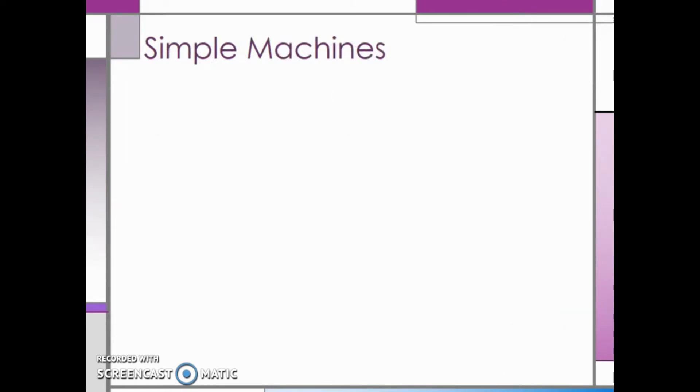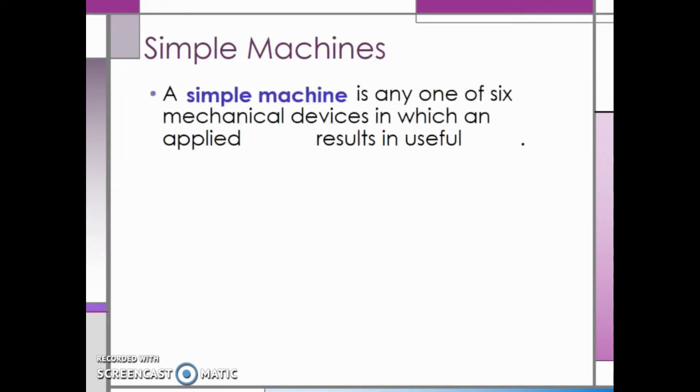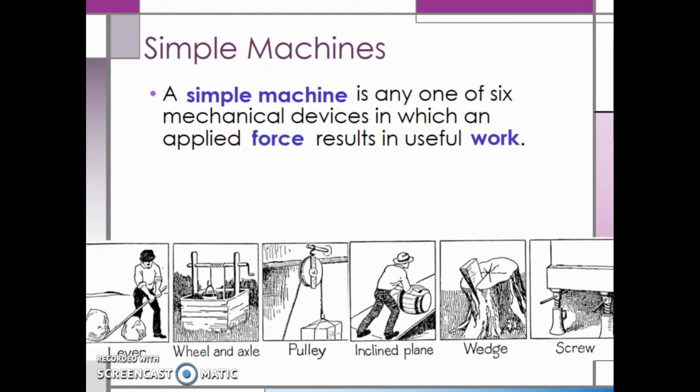In this unit, we are going to focus specifically on simple machines. A simple machine is any one of six mechanical devices in which an applied force results in useful work. The six simple machines are the lever, wheel and axle, pulley, inclined plane, wedge, and screw.